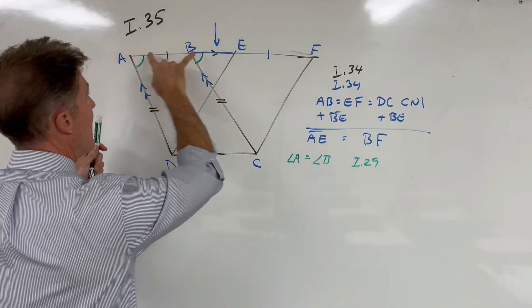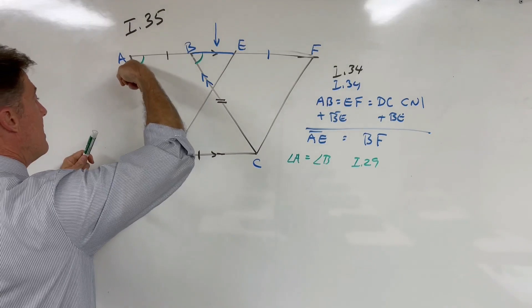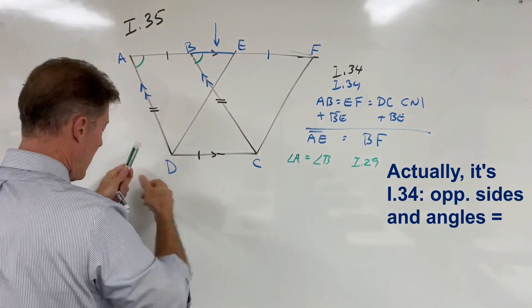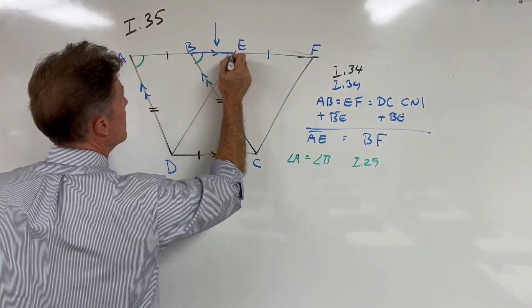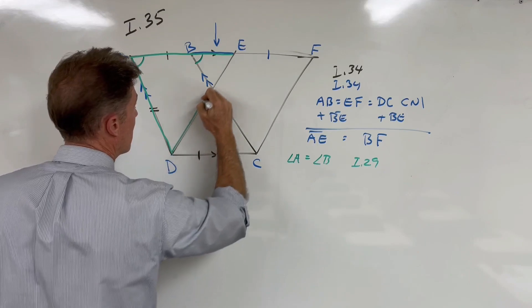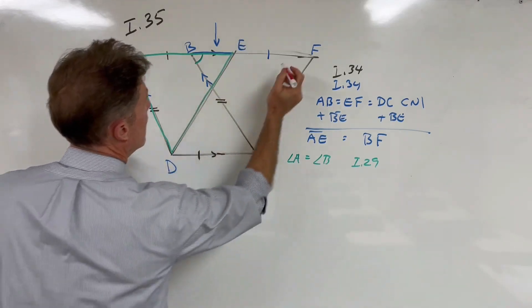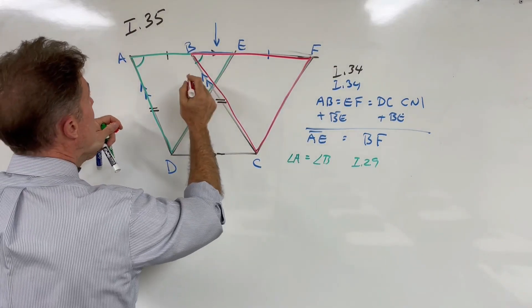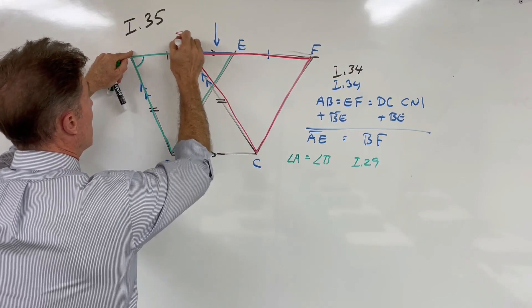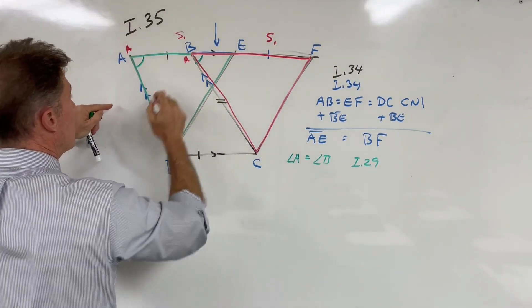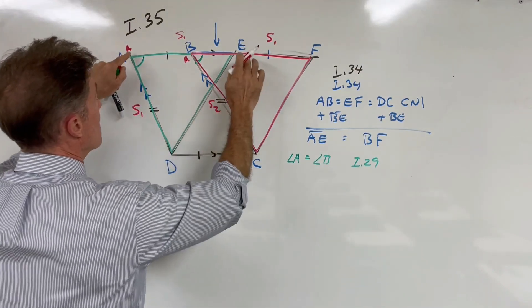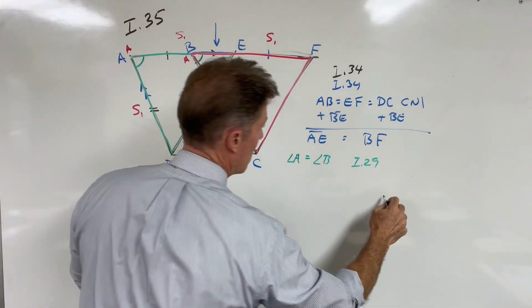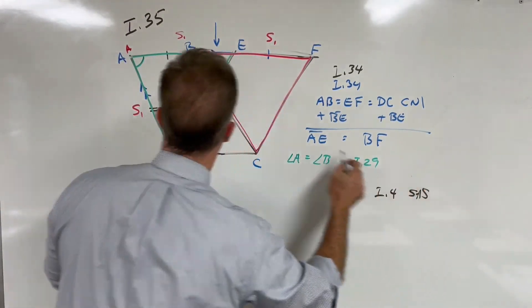So now let's look at what we have. We have AE equals BF, and we know AD equals BC, again from Prop 34. We have two overlapping triangles — this triangle in green and this triangle in red. They share side one, have this angle equal to this angle, and side two equal to side two. So we have side-angle-side equal to side-angle-side.